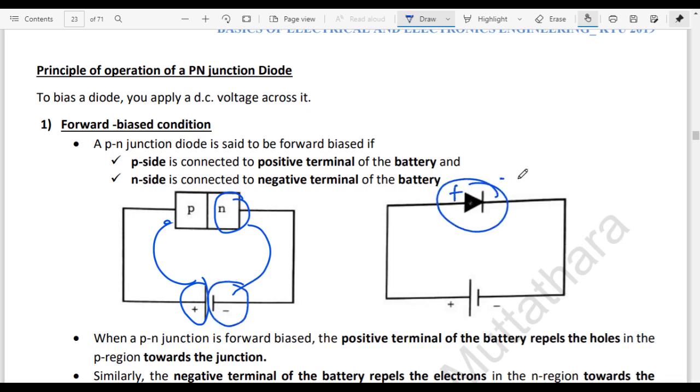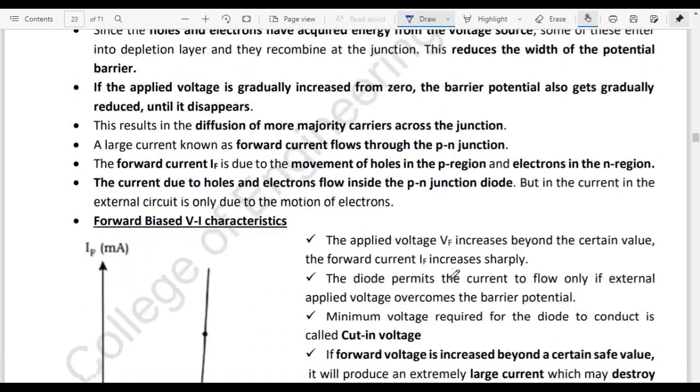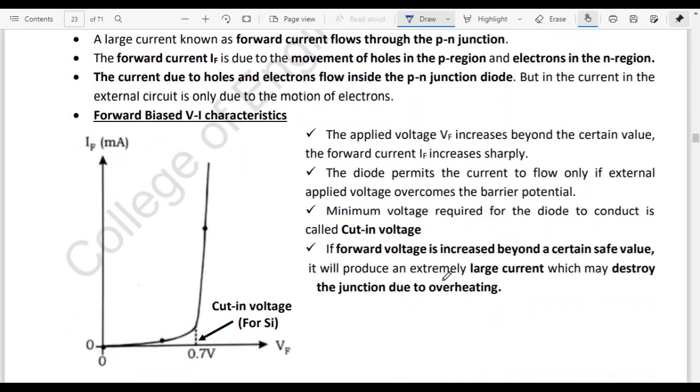If you use the diode, this is positive, this is negative. The positive is connected to the positive terminal and negative is connected to the negative terminal of the battery. That is the short form forward biased, forward characteristics of a diode.